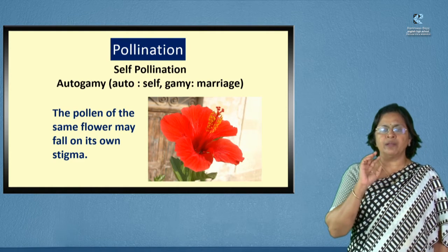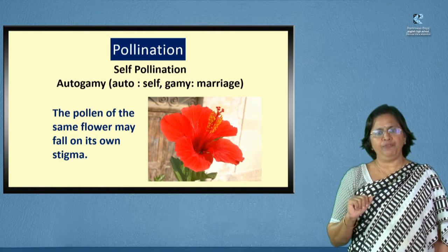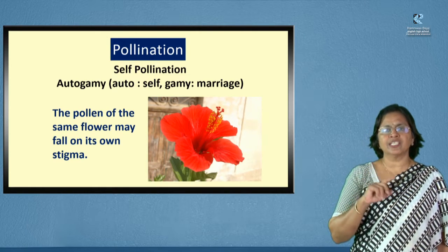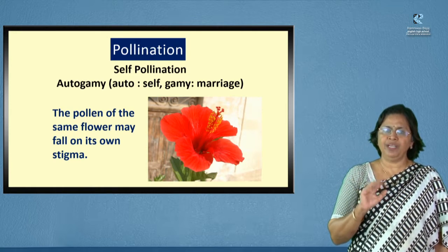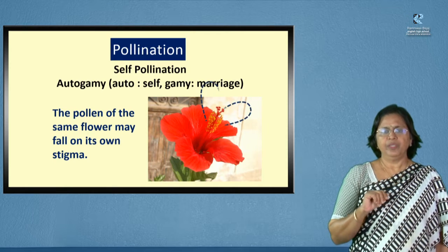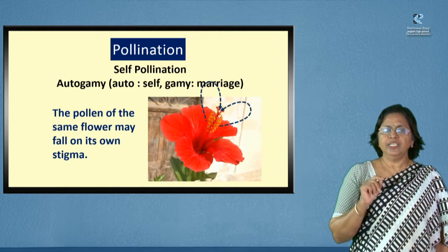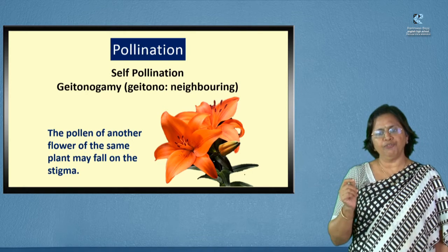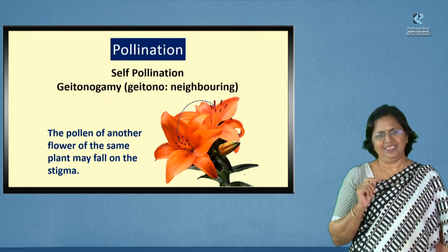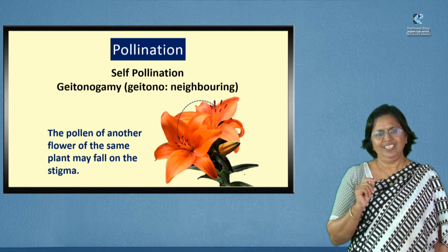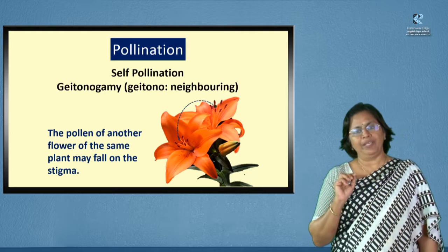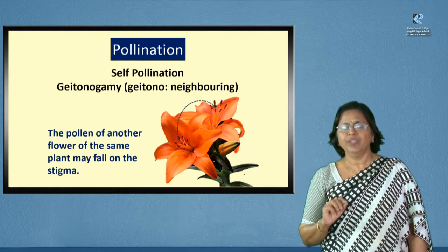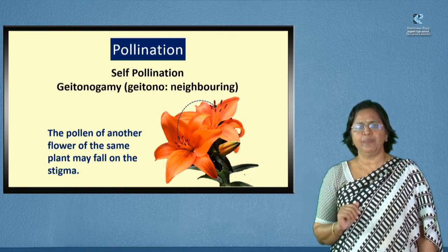The first type, where pollen falls on the same flower, is called autogamy. When self-pollination is between the anther and the stigma of the same flower, we call it autogamy. When it is from one flower to another flower on the same plant, then it is called geitonogamy — both pronunciations are acceptable. 'Geitno' means neighboring.